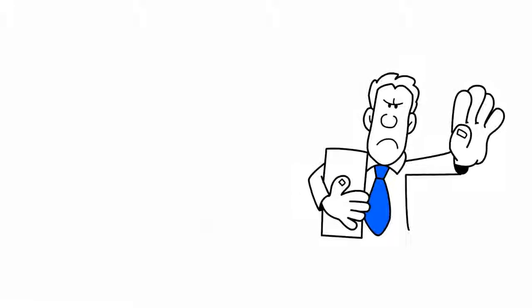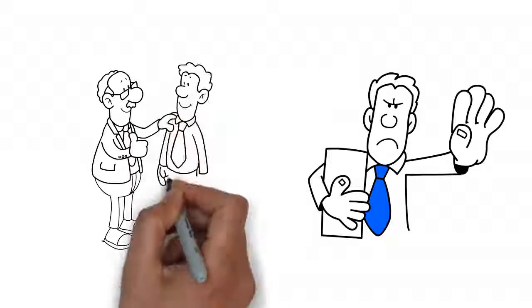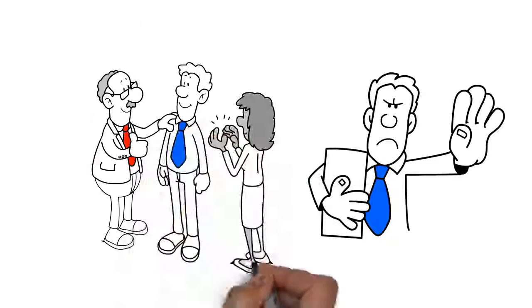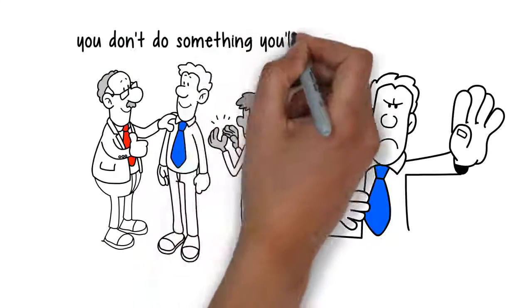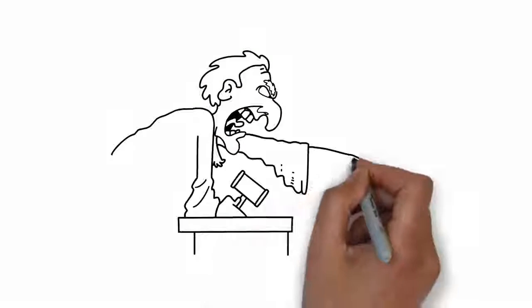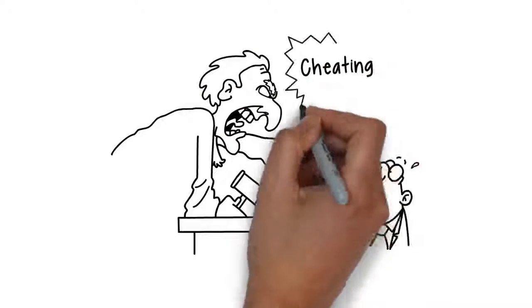You made it to university because you're capable and competent, and it's important you don't do something you'll end up regretting. Actions have consequences, and the consequences for cheating are severe.